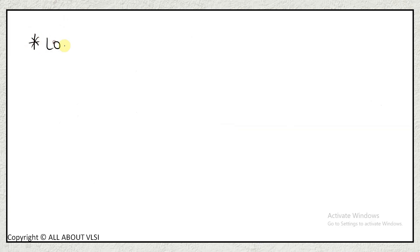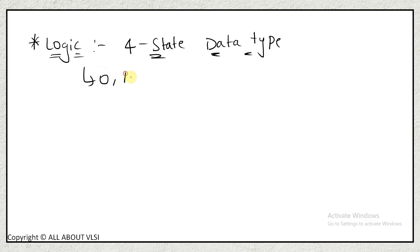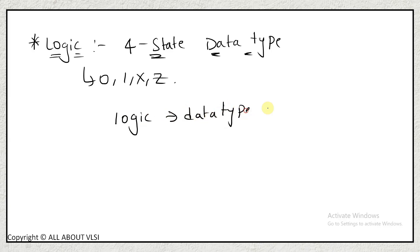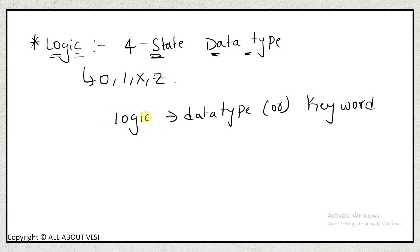Let us discuss about the first data type, which is logic. The logic is a four-state data type — it can have the values zero, one, x, and z. The keyword for using this particular logic data type is simply 'logic'. For example, if in a module you want to use this particular logic data type, you can simply write it as 'logic'.